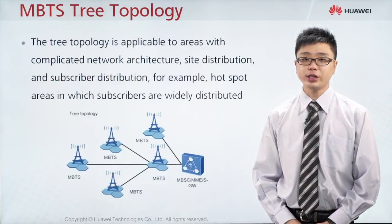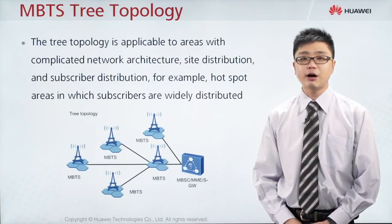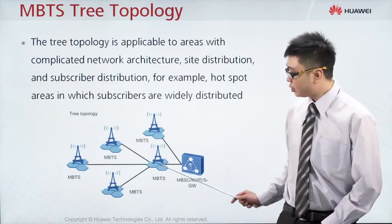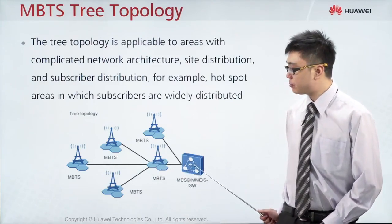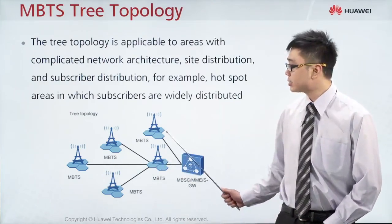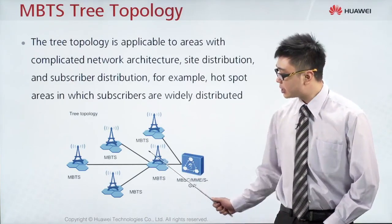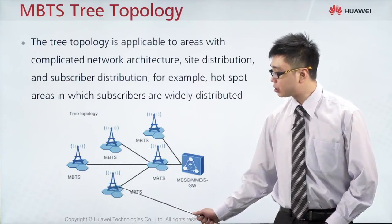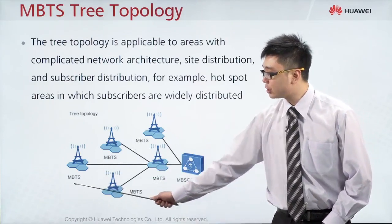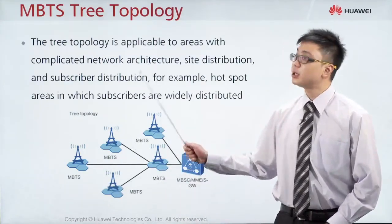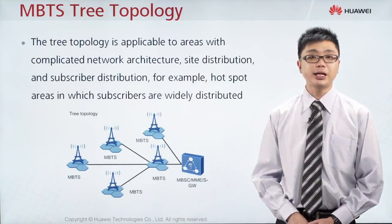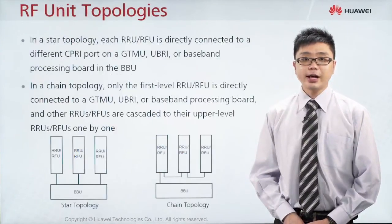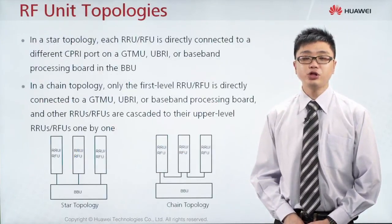The third type is tree topology, which is a combination of both star and chain. Here you have a star connection where one BSC is connected to two BTS units, and from each BTS it spreads further — another star connection, which can then extend through a chain connection. So tree topology is like tree branches, consisting of both star and chain together.